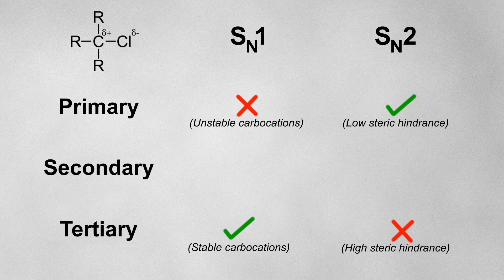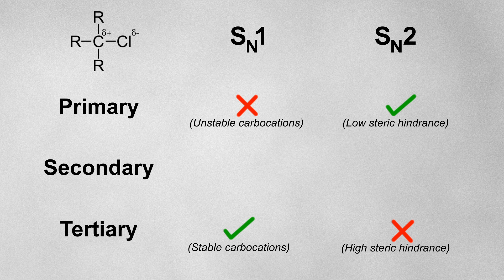Secondary halogeno alkanes, being halfway between primary and tertiary, can undergo either SN1 or SN2.